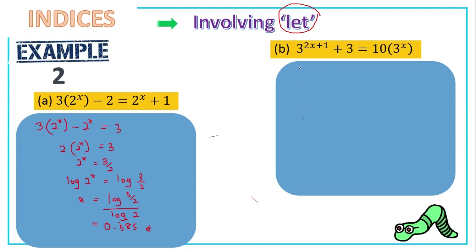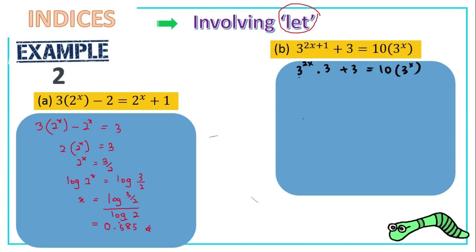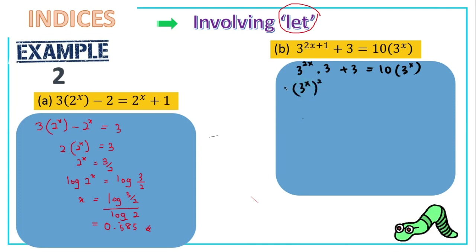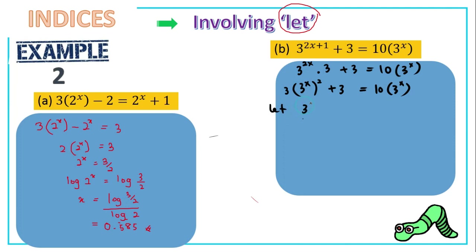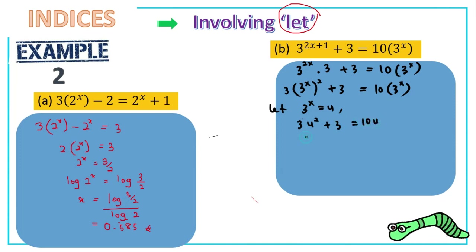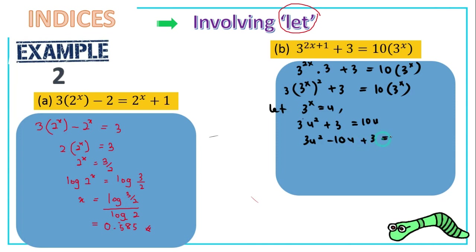For the current example, we can express 3^(2x) · 3 + 3 = 10 · 3^x. Using the index rule, 3^(2x) = (3^x)², so we have 3(3^x)² + 3 = 10 · 3^x. Now let u = 3^x, giving 3u² + 3 = 10u, or equivalently 3u² − 10u + 3 = 0.